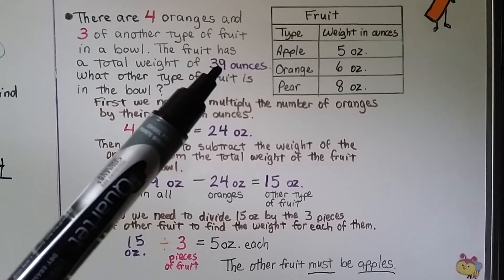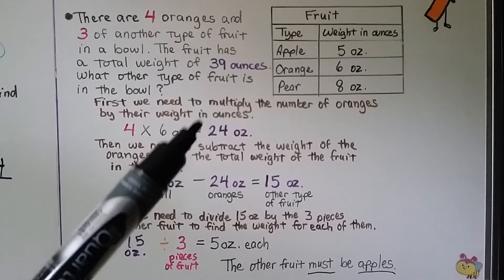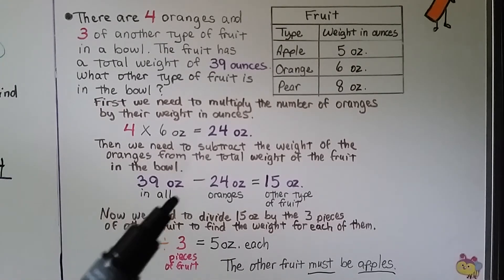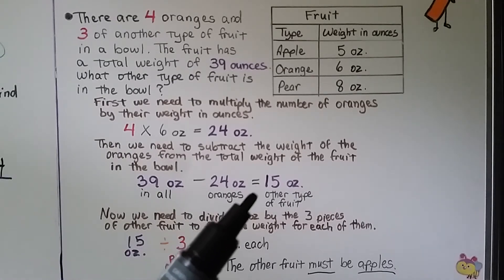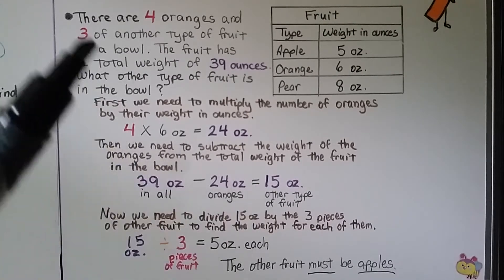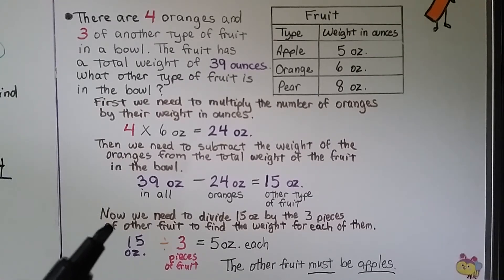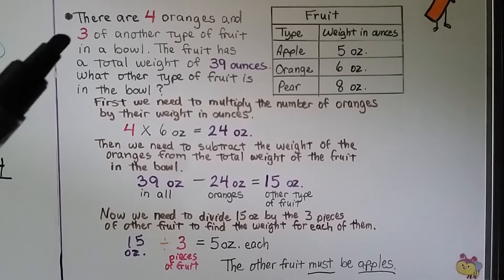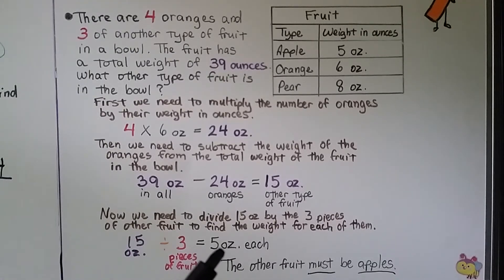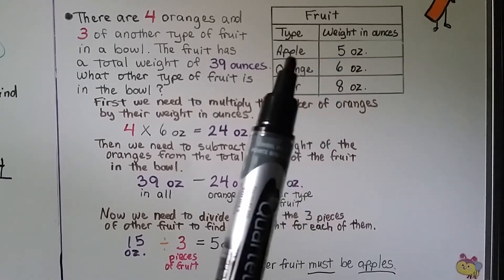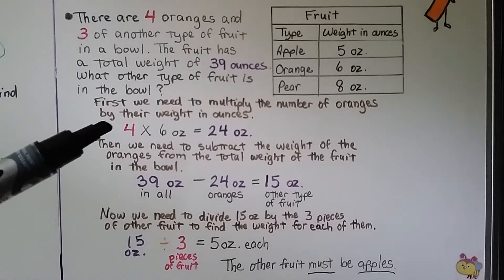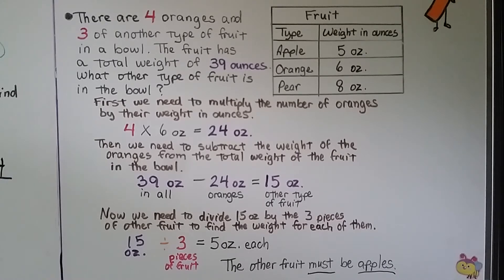We know the total weight is 39 ounces, so we subtract the weight of the oranges from the total. 39 ounces minus 24 ounces equals 15 ounces for the other type of fruit. Since there are 3 pieces of the other fruit, we divide 15 ounces by 3, which equals 5 ounces each. Looking at our table, the fruit that weighs 5 ounces is the apple, so the other fruit must be apples. We solved it using multiplication, then subtraction, then division.